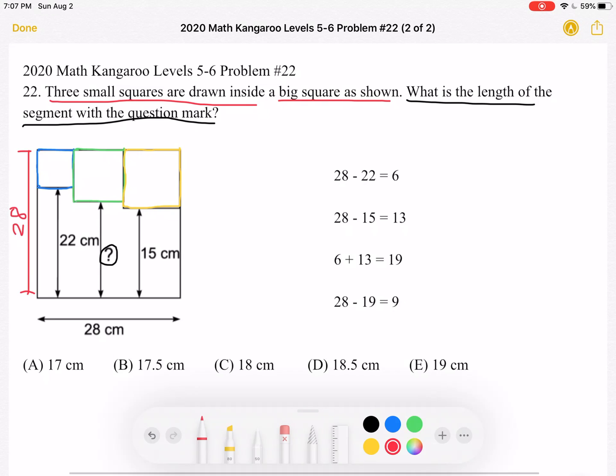And if we know that this is 22 centimeters, we can do 28 minus 22 centimeters to see that the blue square has side length 6.